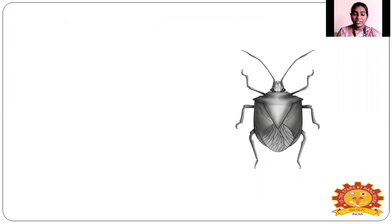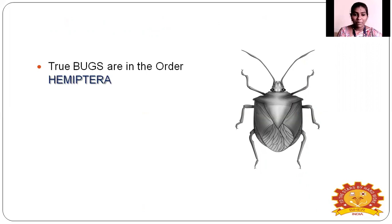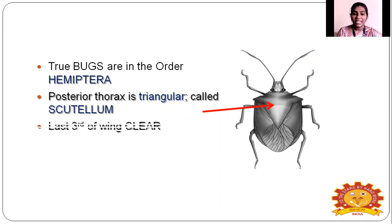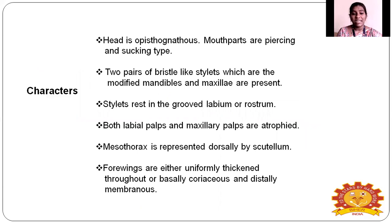How can we identify them through their characters? First of all, they should be called true bugs. True bugs are in Order Hemiptera and have distinct defined characteristics in their morphology. The posterior thorax is triangular in shape — this part is called the scutellum of bugs. The third part of the wing is clearly membranous.